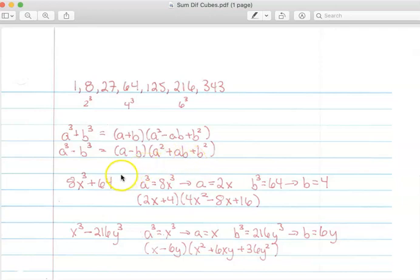So how does this work? Suppose I want to factor this. I have 8x cubed plus 64.